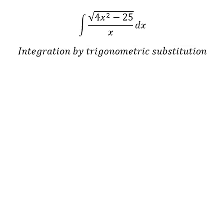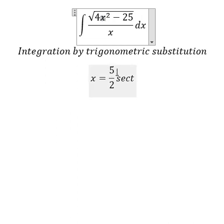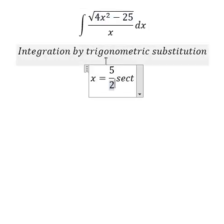So I will put x equals 5 over 2 secant of t, because if I put this one here, we have 25 over 4 secant of t squared, and 4 and 4 we cancel, 25 and 25. We can do factorization: secant of t squared minus 1, we change for tan t squared, and later that will simplify the square root.